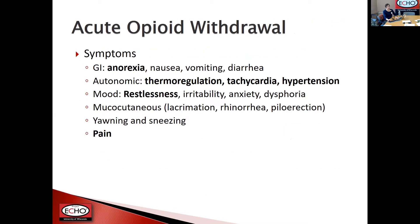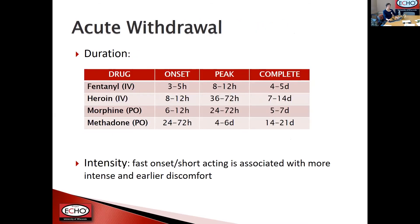There are a number of other symptoms not part of the formal diagnosis: anorexia, loss of appetite, tachycardia, hypertension, restlessness, and increased pain. The pattern of withdrawal depends upon pharmacokinetics, with fentanyl having the fastest onset of withdrawal — around three to five hours, complete by five days — and methadone much longer, with onset at 24 to 72 hours and complete by 14 to 21 days. Intensity of withdrawal is associated with the speed of onset and short-acting nature of the drug, so those affecting the body sooner tend to have more intense and earlier withdrawal discomfort.